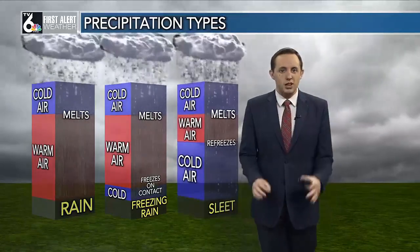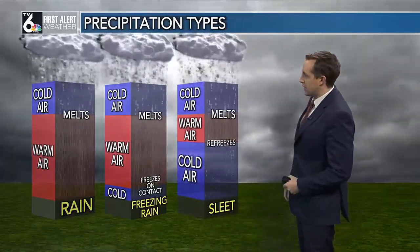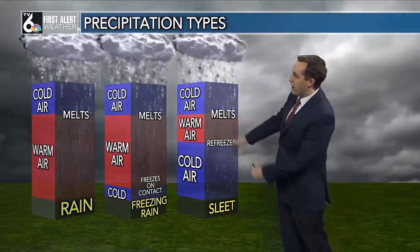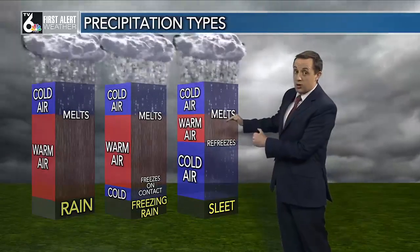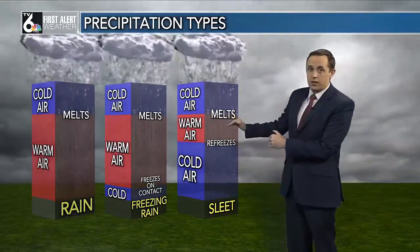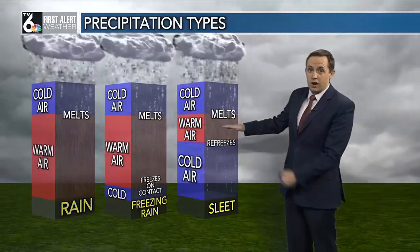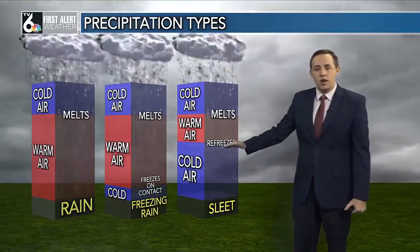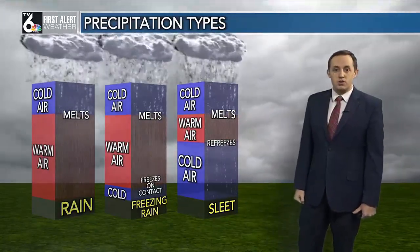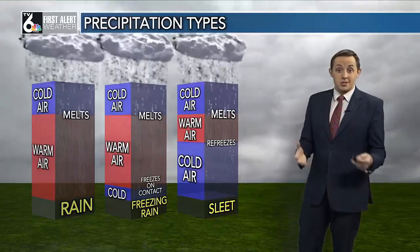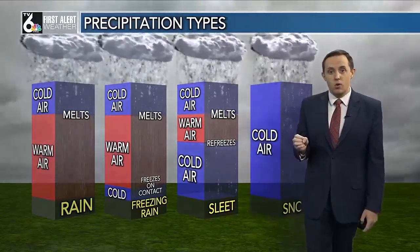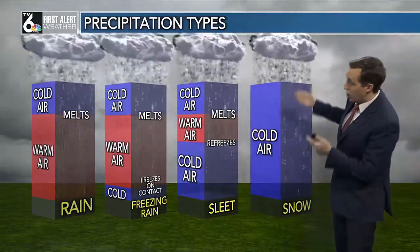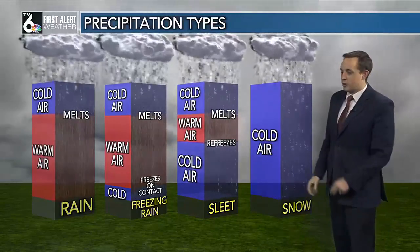Of course, any little bit of ice can cause a lot of problems on the roadways. But with a shallower layer of warm air in the mid to upper levels of the atmosphere and then a deeper area of cold air from the mid-atmosphere down to the surface, that's where we get sleet, or those ice pellets. And if it's below 32 degrees all the way down to the surface, we can get snow.